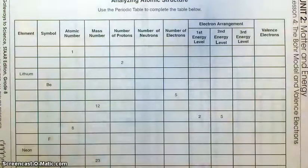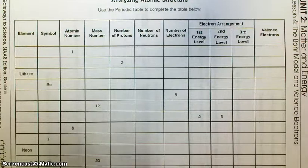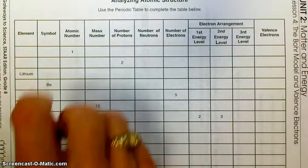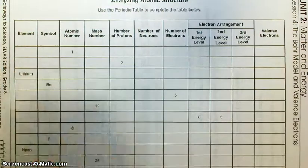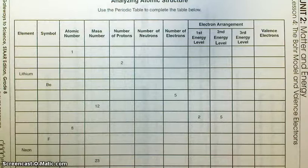We have learned previously how to do the APE MAN mnemonic: atomic number equals number of protons, equals number of electrons, and then mass number minus atomic number equals neutrons.